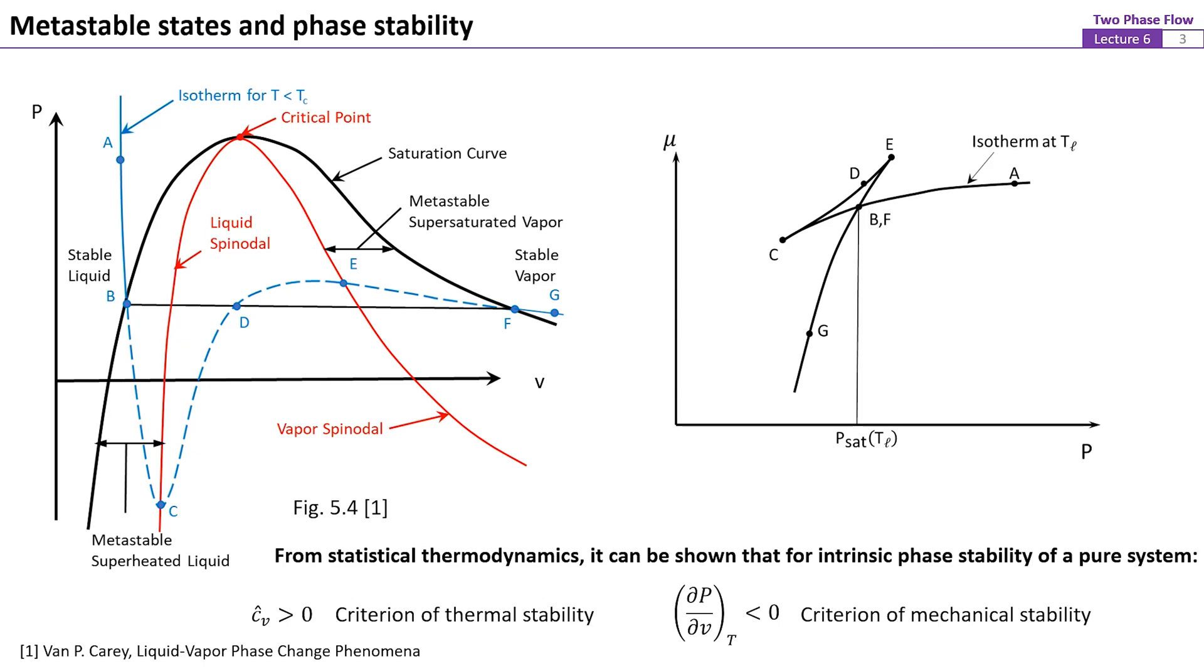From statistical thermodynamics, it can be shown that for intrinsic phase stability of a pure system, the necessary and sufficient conditions are that first, the specific heat must be a positive value, and second, the derivative of pressure versus specific volume must be negative.